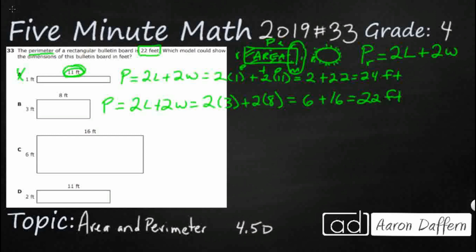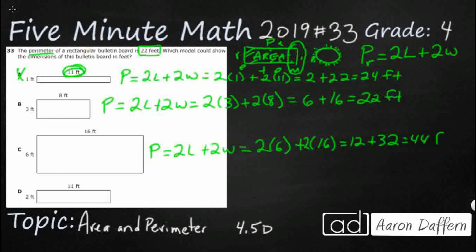So let's just double check to make sure that C and D are incorrect. C — that's pretty big. Double the length plus double the width: let's double six and add that to double 16. Double six is 12, double 16 is 32 — that's way too big, 44. That's actually twice as big. Take a look at what they did here: if you add six and 16 together, that makes 22. So if you just look at those two sides you would get 22 feet, which is what we're looking for — but you've only measured two sides. The rectangle has four. So that's the trick on that one, and that's incorrect.